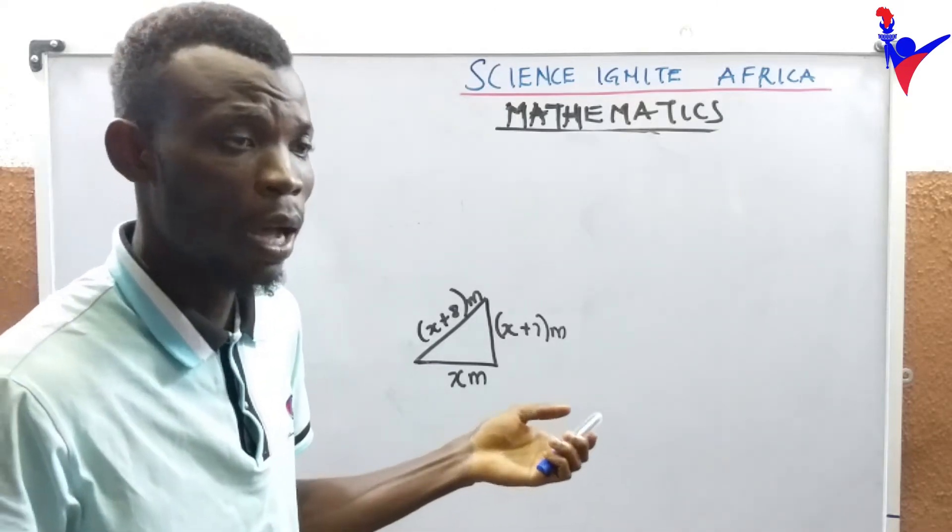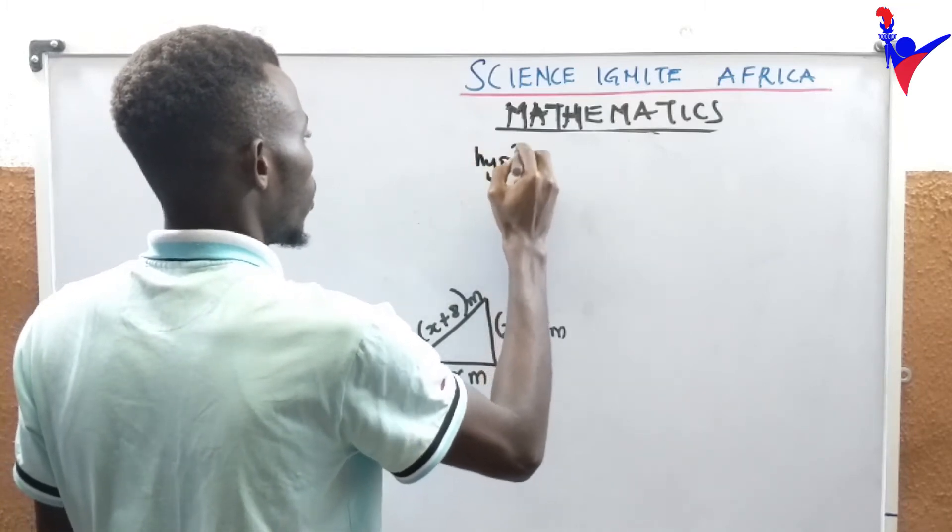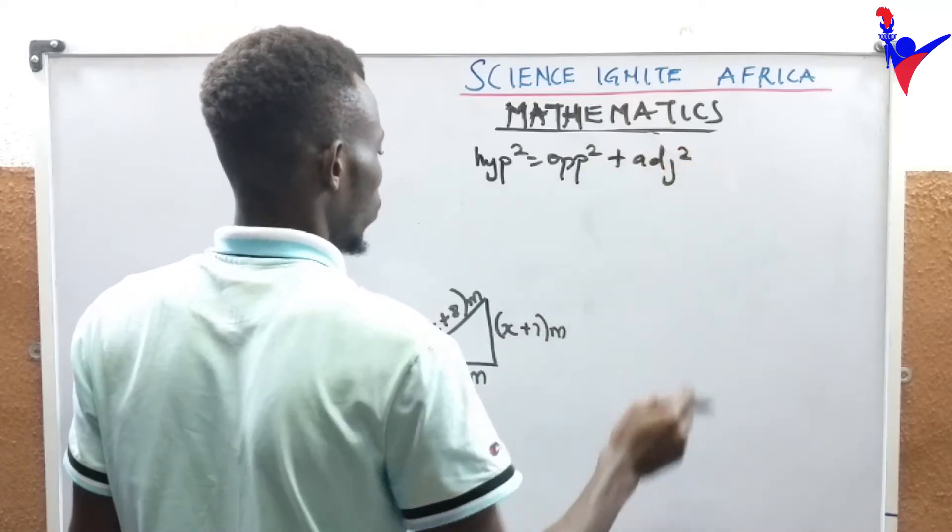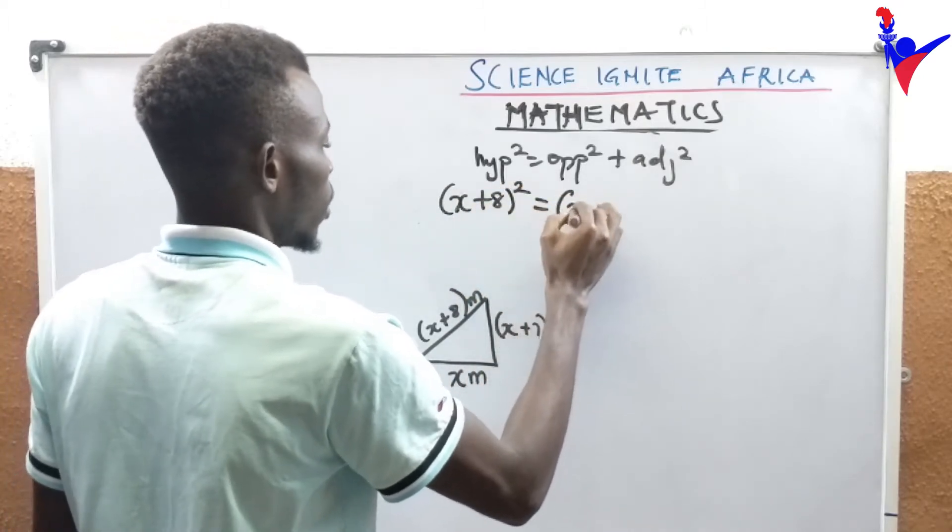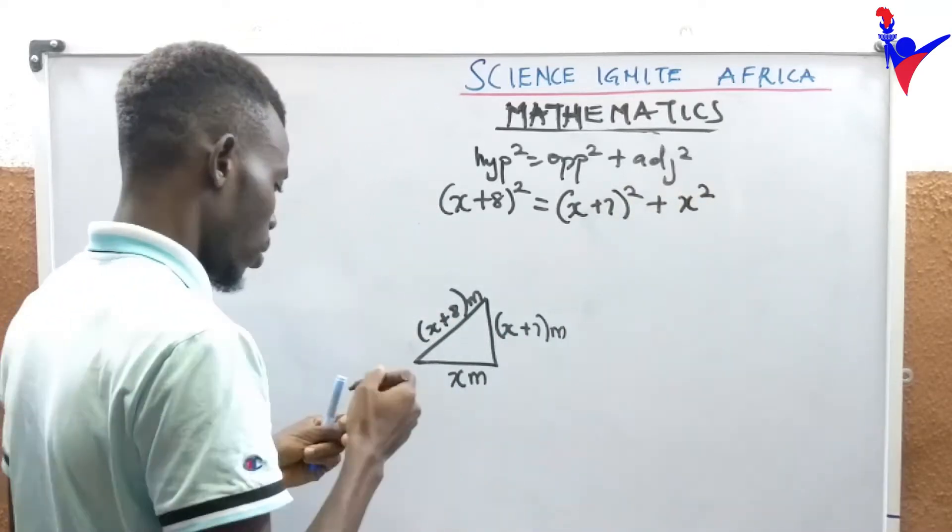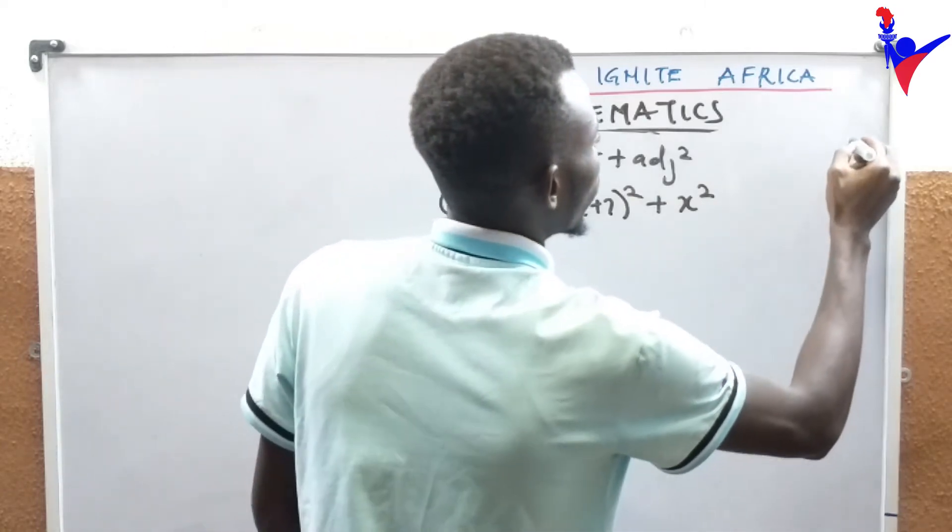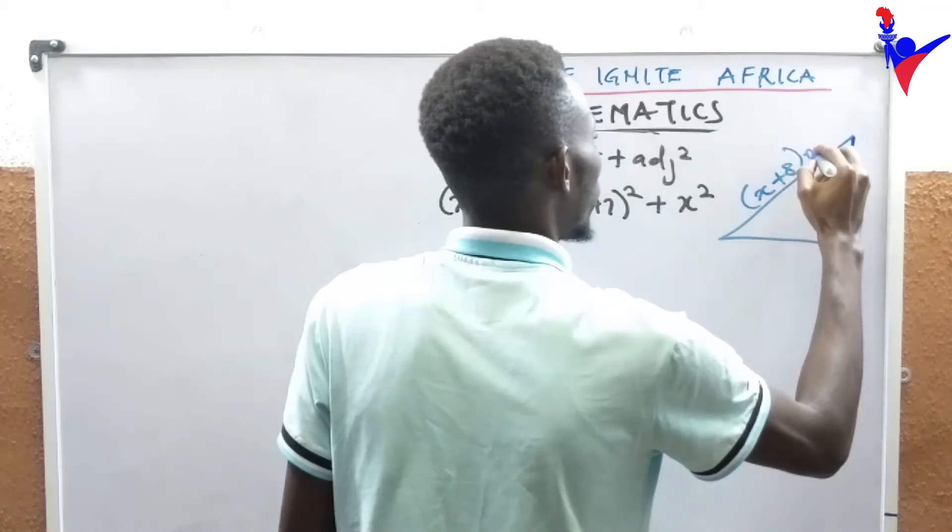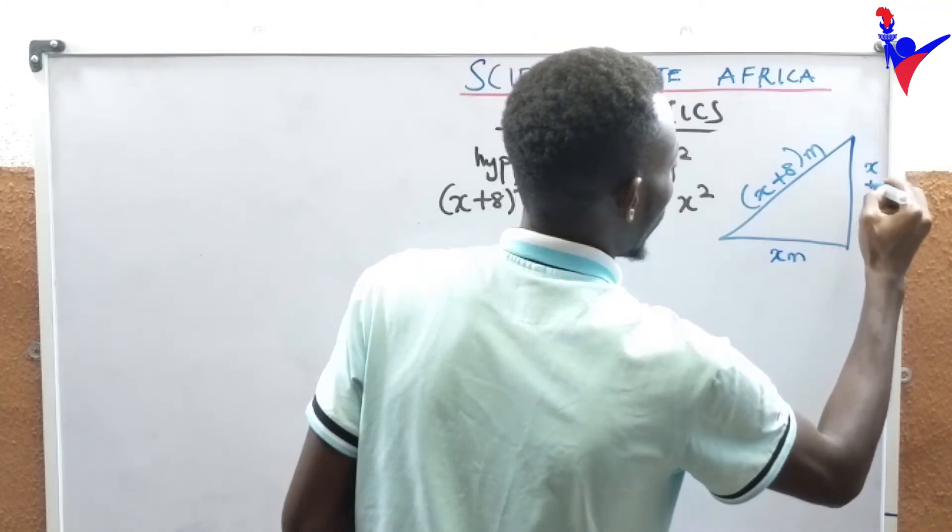We can switch over to Pythagoras theorem where we have hypotenuse squared equals opposite squared plus adjacent squared. That would be x plus 8 squared equals x plus 7 squared plus x squared.